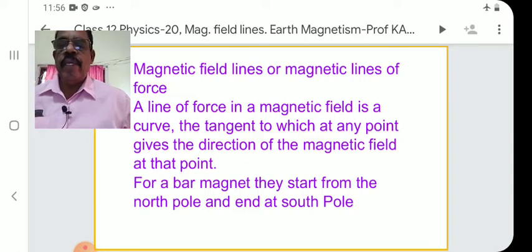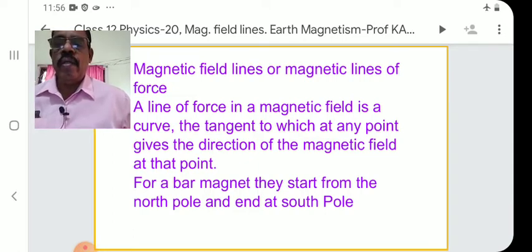For a bar magnet, the field lines start from the North Pole and end at the South Pole.